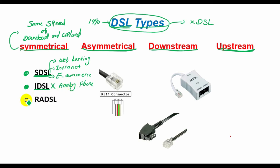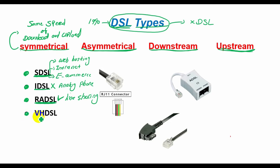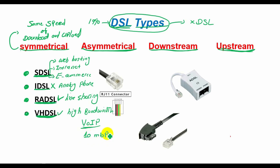Rate-Adaptive DSL, or RA-DSL, is a variation on ADSL that can modify its transmission speeds based on signal quality. RA-DSL supports line sharing. Very High Bit Rate DSL, or VDSL, is an asymmetric version of DSL that can share a telephone line. VDSL supports high bandwidth applications such as Voice over IP. VDSL can achieve data rates up to approximately 10 Mbps, making it the fastest available form of DSL. To achieve these high speeds, VDSL uses fiber optic cabling.